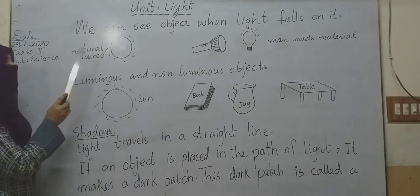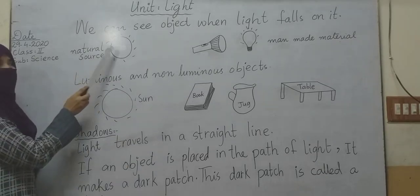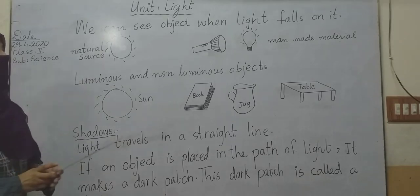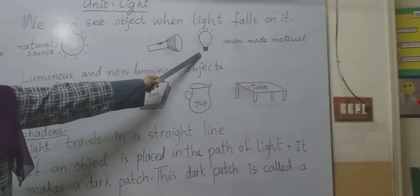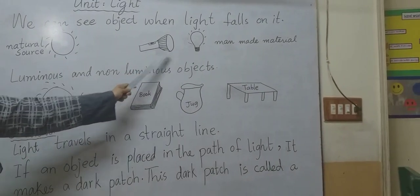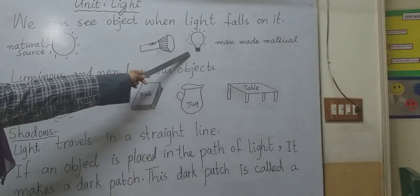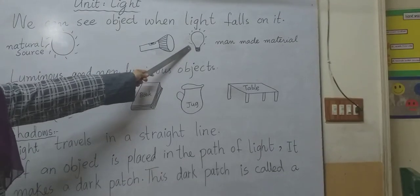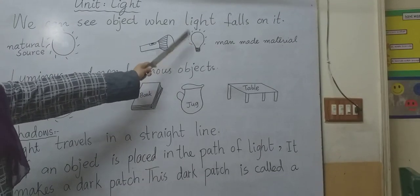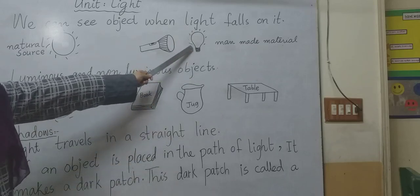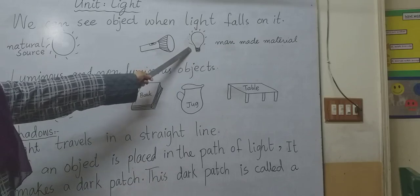Natural sources: the sun is the natural source of light. And this is a torch, a bulb - they are man-made materials. Do you know this bulb? Who invented this bulb? Thomas Edison invented this bulb.